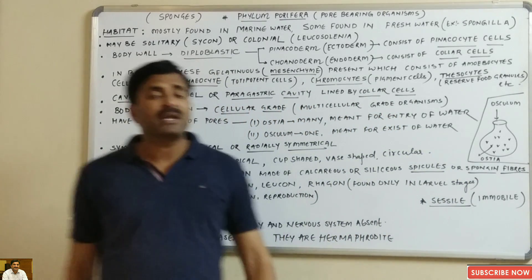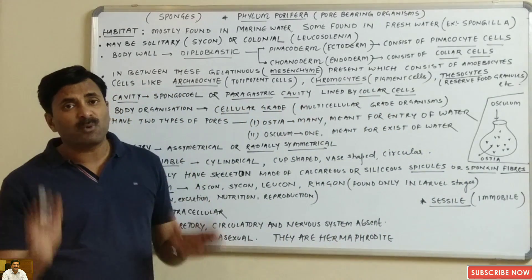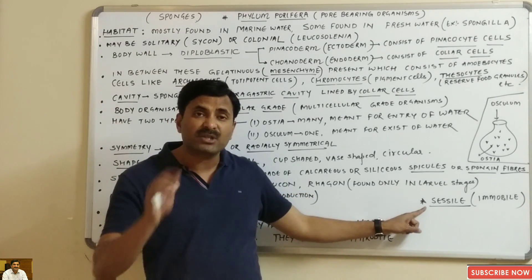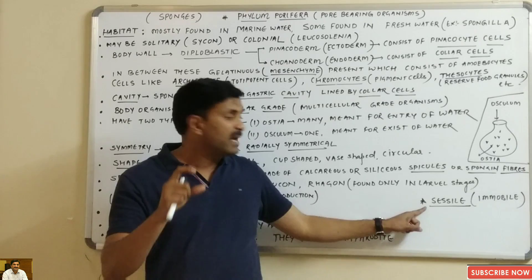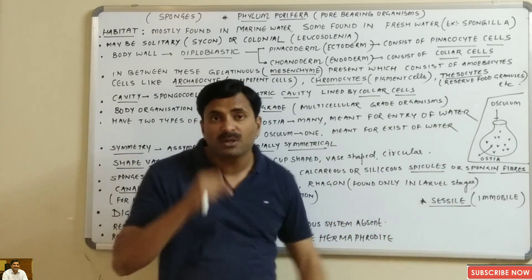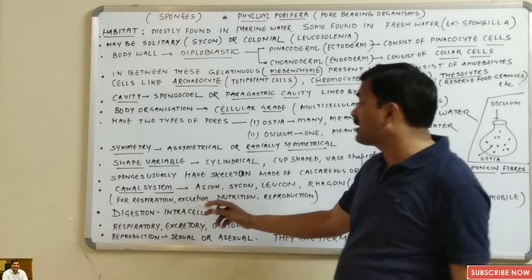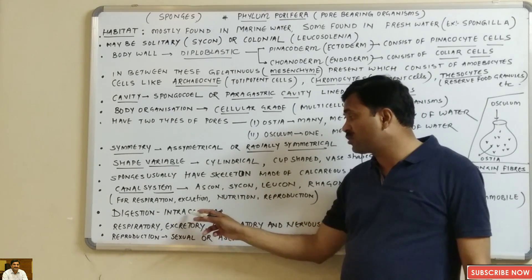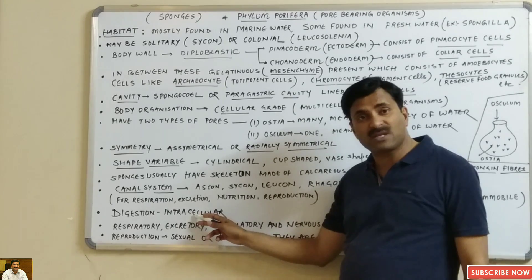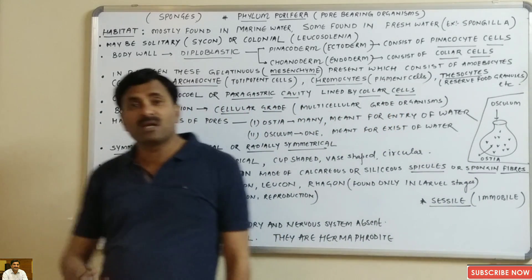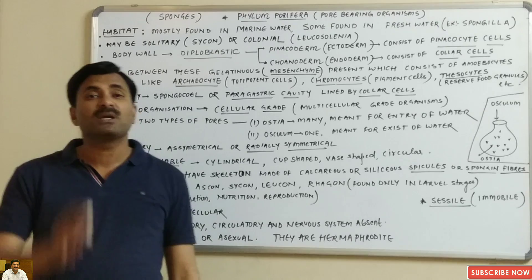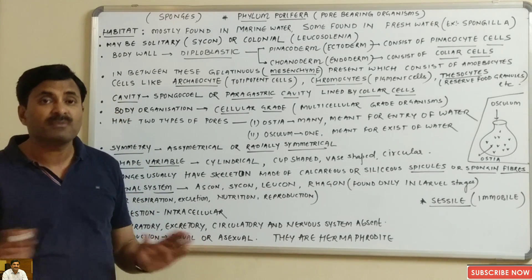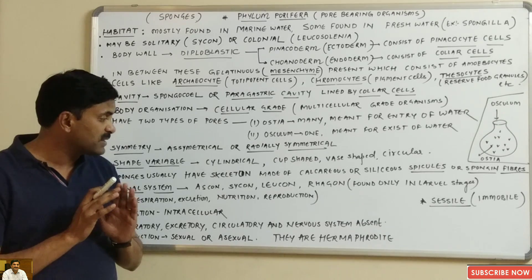All sponges are generally sessile — meaning they are attached to some substratum and are immobile, not moving from one place to another. Regarding digestion, they have intracellular digestion. All major organ systems are absent: they do not have a respiratory system, excretory system, circulatory system, or any type of nervous system.